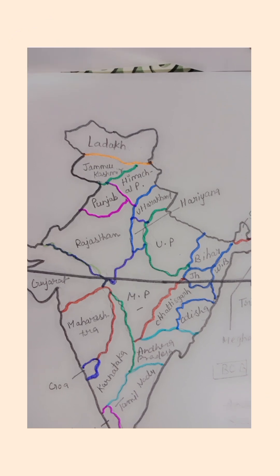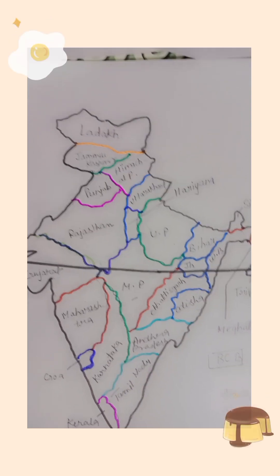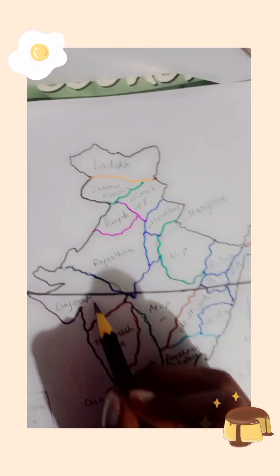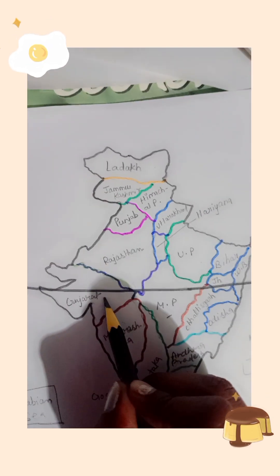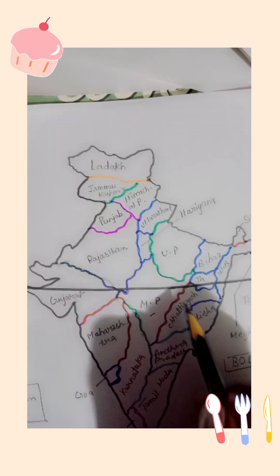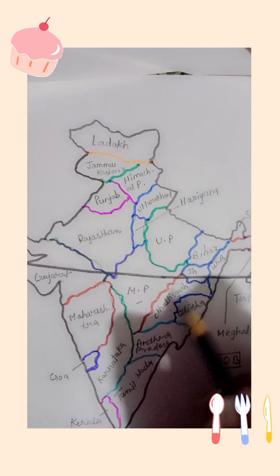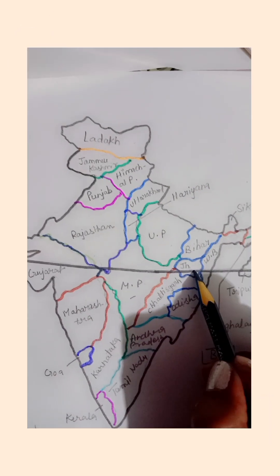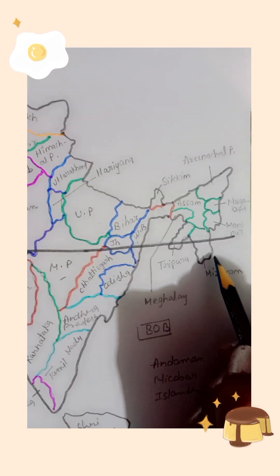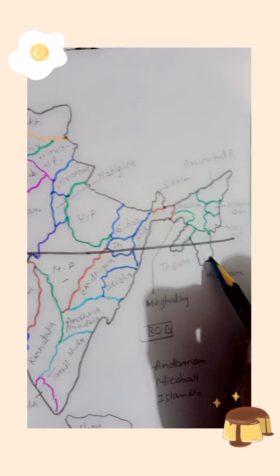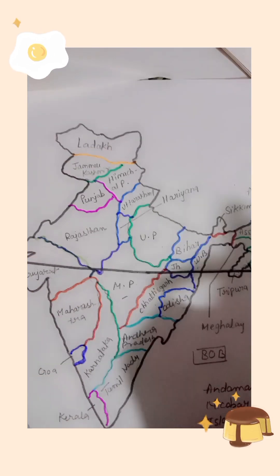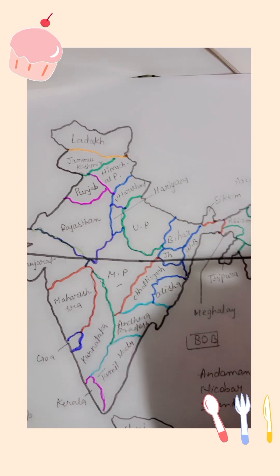Let us see the states through which the Tropic of Cancer passes. No.1 is Gujarat, Rajasthan, Madhya Pradesh, Chhattisgarh, Jharkhand, West Bengal, Tripura, and Mizoram. There are total 8 states through which the Tropic of Cancer passes.